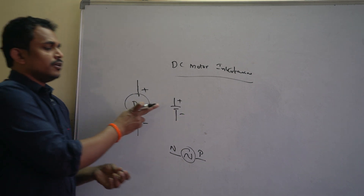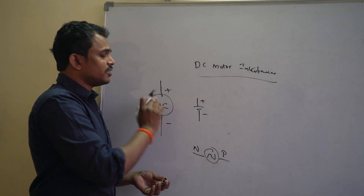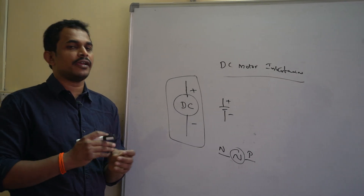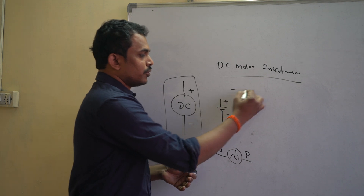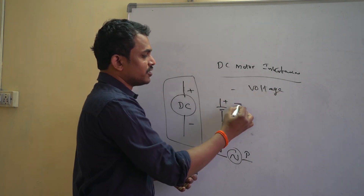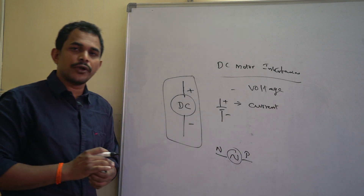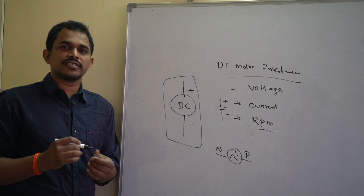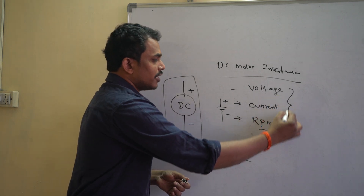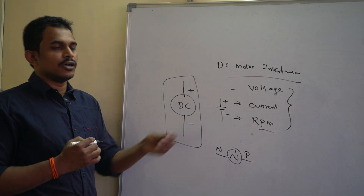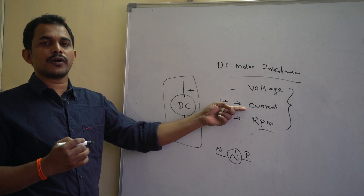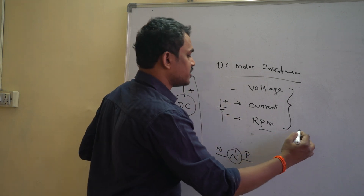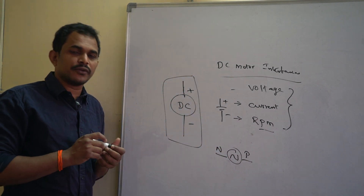DC motors are very simple to control with controller devices, and they are available in different parameters. You have to observe three important parameters: how much voltage it needs to operate, how much current it will draw to run, and the RPM — rotations per minute — which indicates how many rotations it completes per minute.